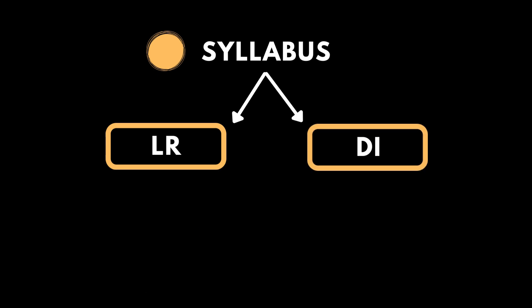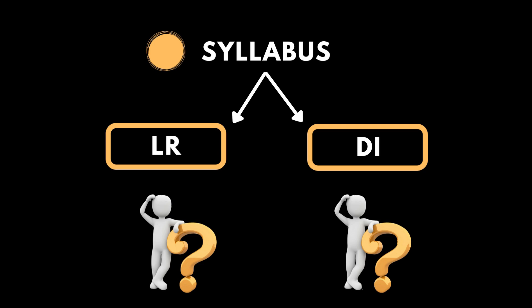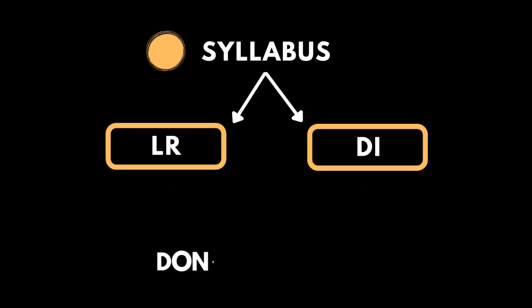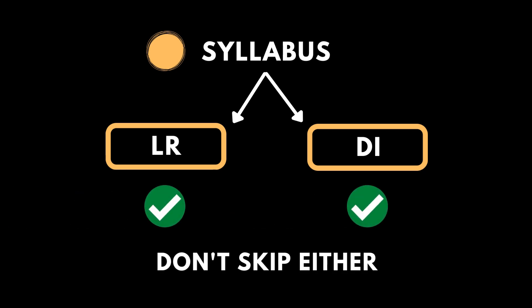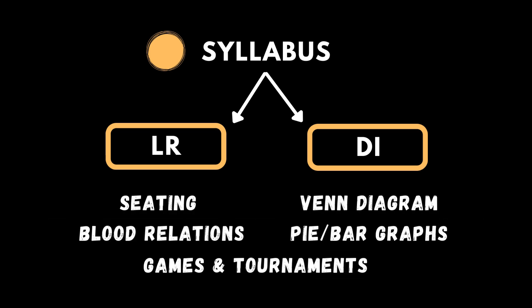Earlier in the exams, there used to be separate sets for DI and LR, but nowadays we are seeing a mixture of these sets, which means that it's not recommended for you to skip either of them. If you are preparing for this section, you need to prepare both LR as well as DI. There are several topics which appear in the exam under these buckets, which I will be putting in the description. They are commonly known as Venn diagrams, seating arrangements, pie charts, tables, bar graphs. A lot of them are there, but I will just list them in the description so that you can check them out and practice them.